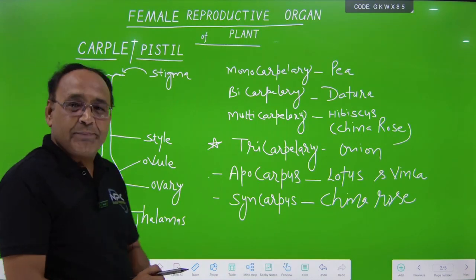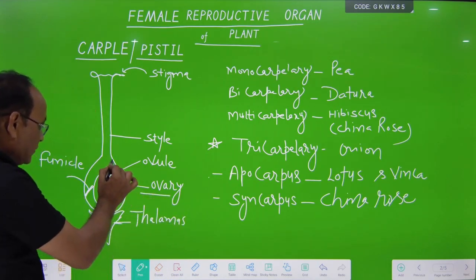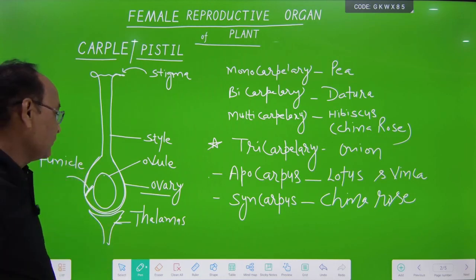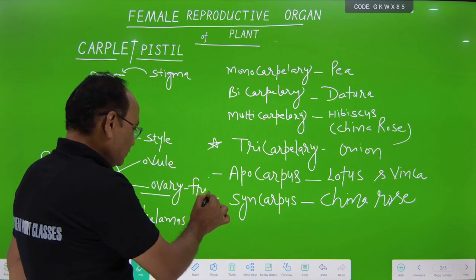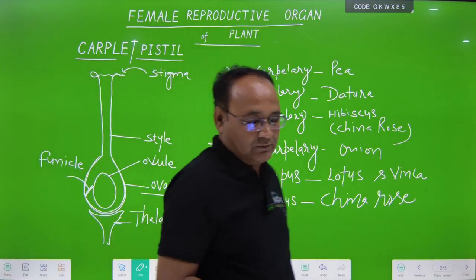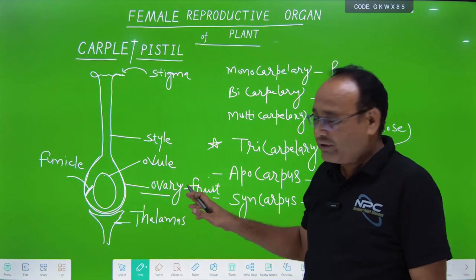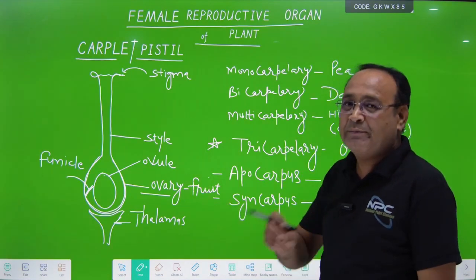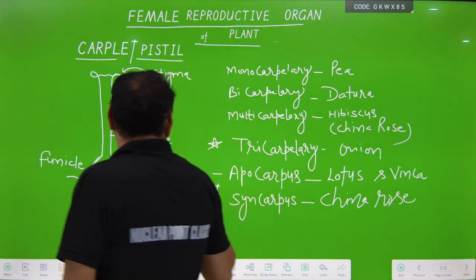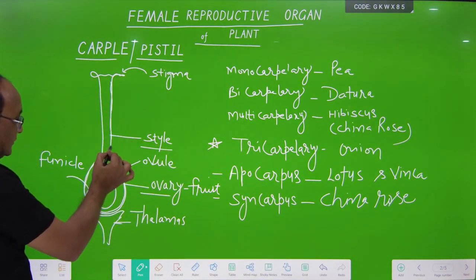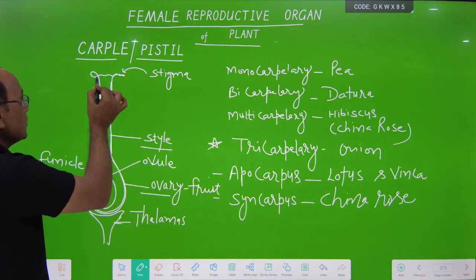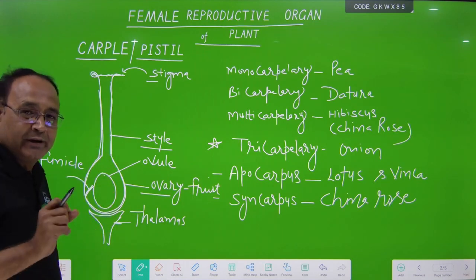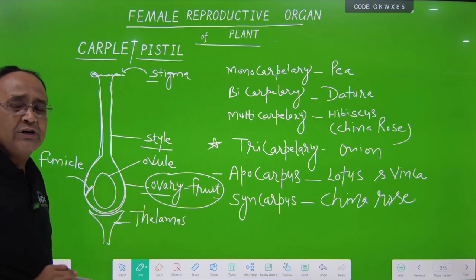The carpal or pistil contains mainly three parts. The first part is the ovary — it is the swollen basal part. After fertilization, the ovary converts into fruit. This means the edible part in maximum fruits is the ovary, though some are exceptions. The second part is the cylindrical part known as the style, and the third, topmost or apical part is known as the stigma.